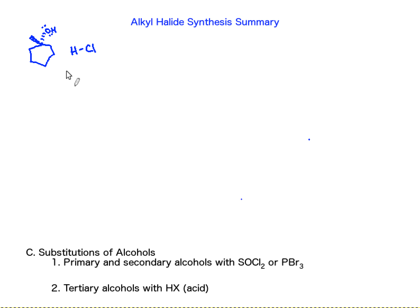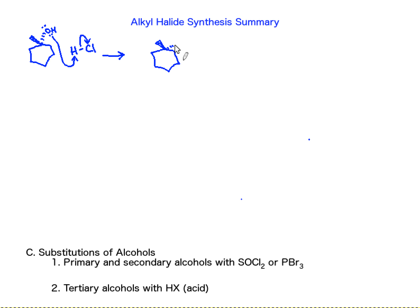Remember when we draw arrows for acids and bases, our Lewis base is the source of electrons which will form a bond with the hydrogen. So the first step in this substitution reaction is the protonation of our alcohol. This has solved the problem we had — OH was a bad leaving group, but we've turned that OH into H2O through protonation with an acid.